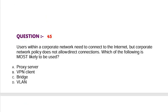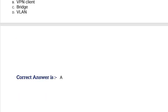Question: Users within a corporate network need to connect to the internet, but corporate network policy does not allow direct connections. Which of the following is most likely to be used? Option A, proxy server. Option B, VPN client. Option C, bridge. Option D, VLAN. Correct answer is Option A.